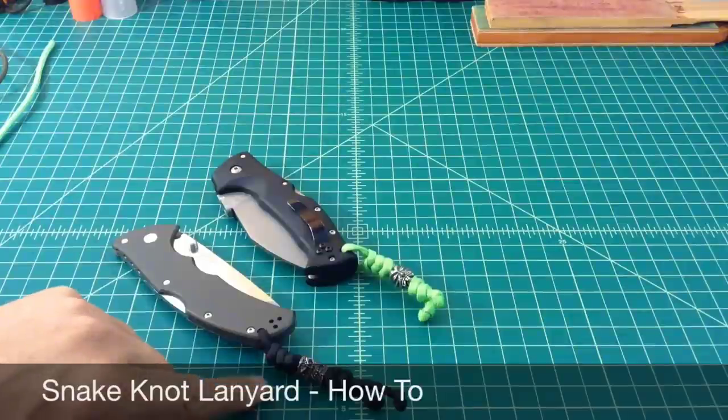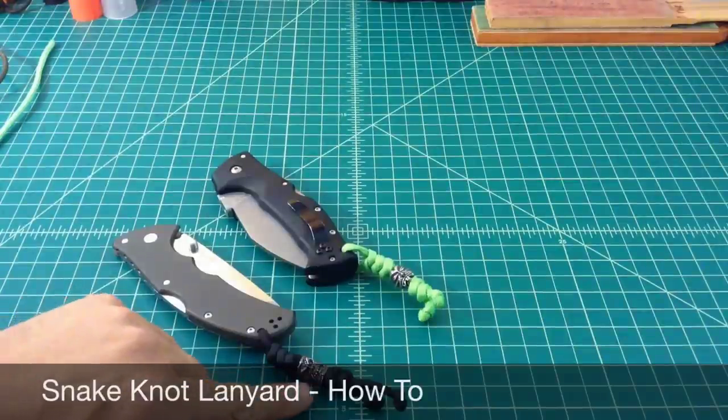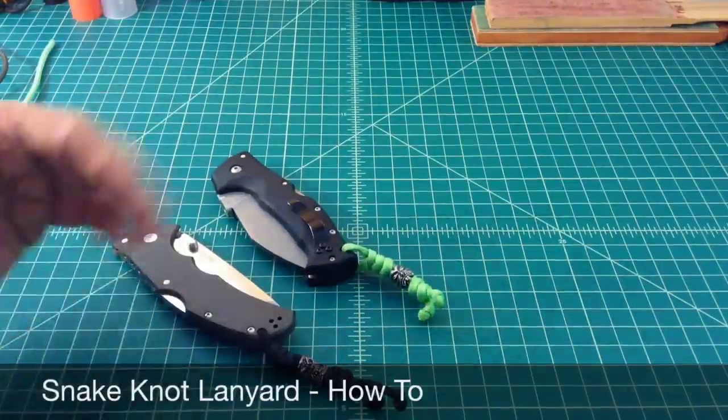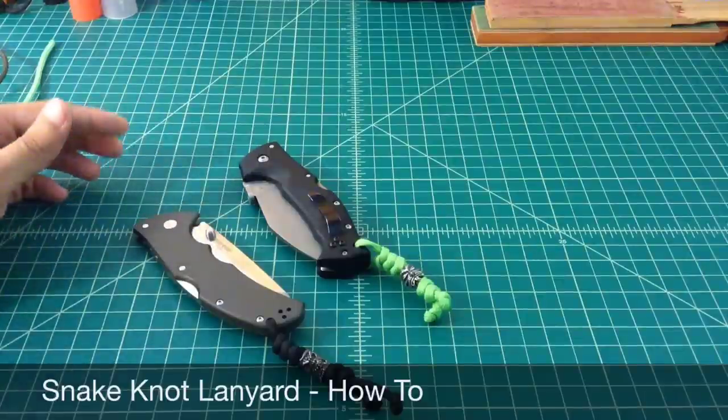Typically when I put these on, I just tie three knots, put a bead, and then two more knots. I have these on a couple different knives. These just happen to be two Cold Steel knives.